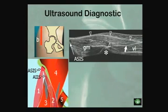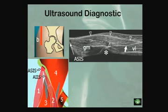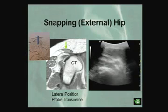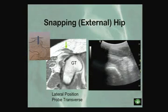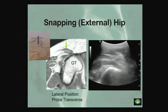One thing I've incorporated into my practice is diagnostic ultrasound. You get really great anatomy with these ultrasound devices — here's the gluteus medius, the iliotibial band — and here's an example of a snapping hip on ultrasound.